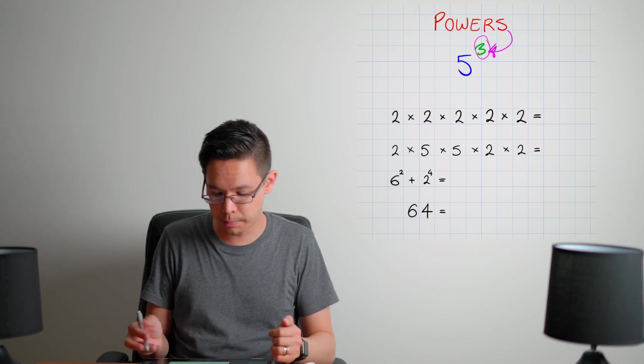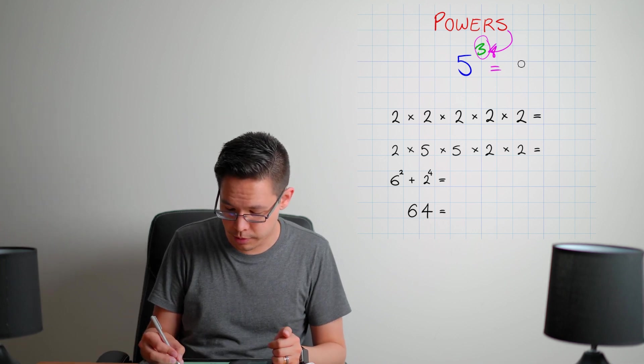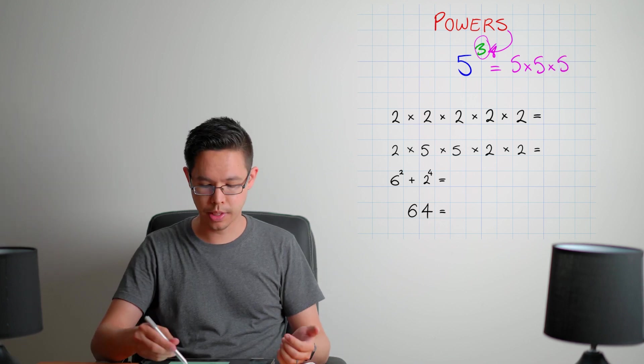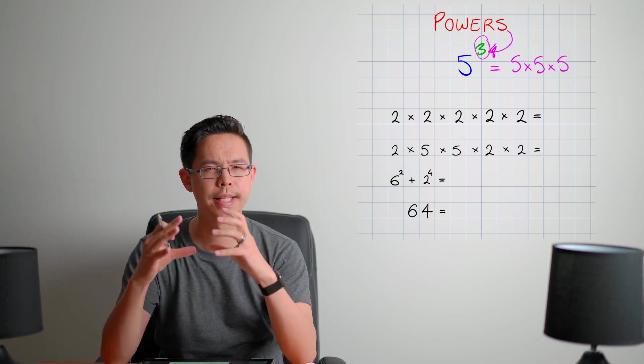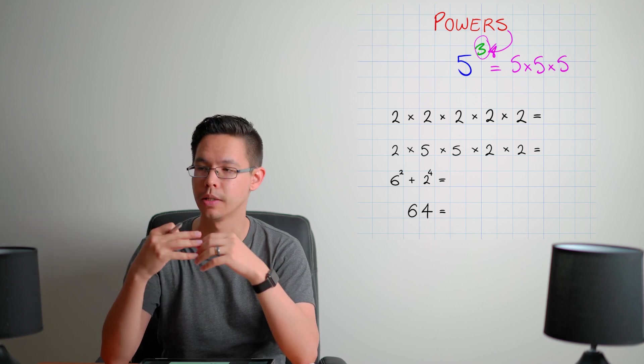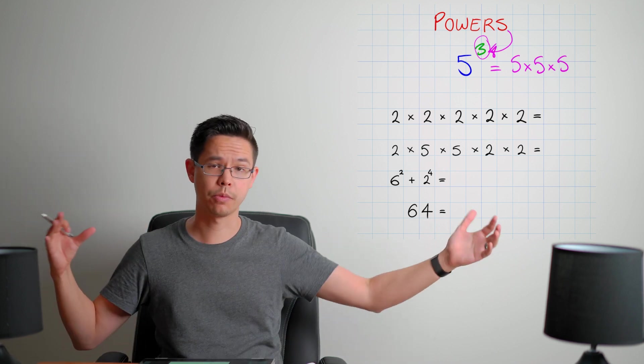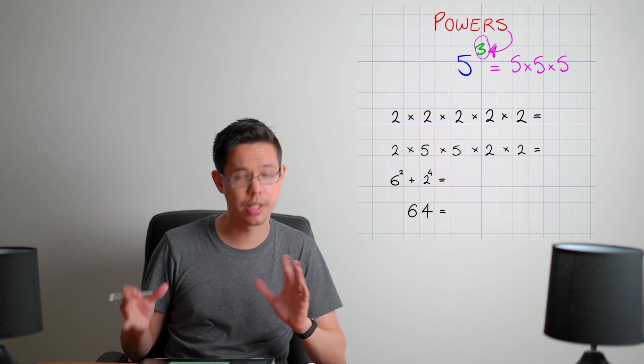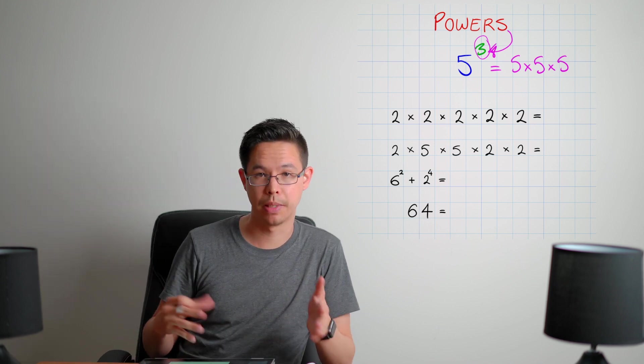What does that mean? Well, that basically means five times itself three times, because that's what the number is representing. It's a way of condensing information. I can take something really, really long and then make it shorter if it's the same number multiplying by itself many, many times.